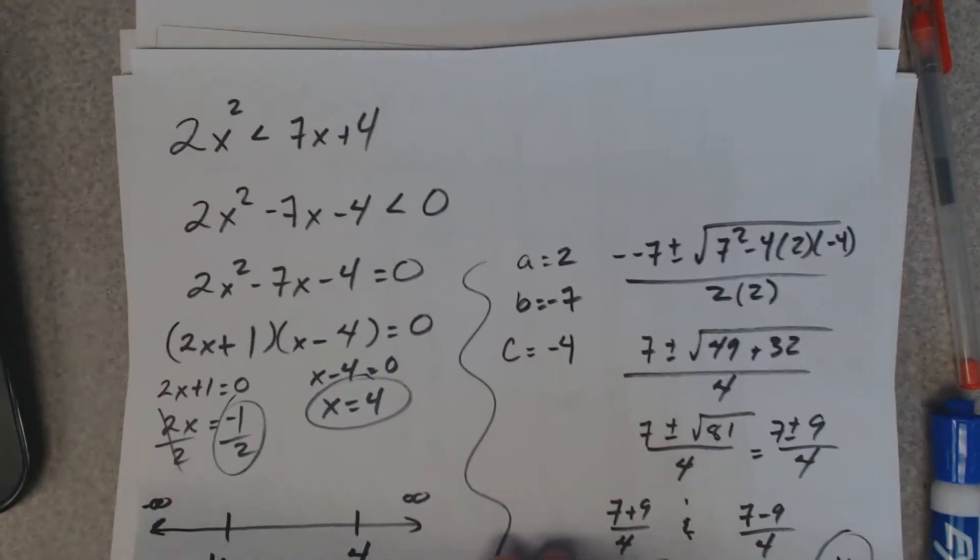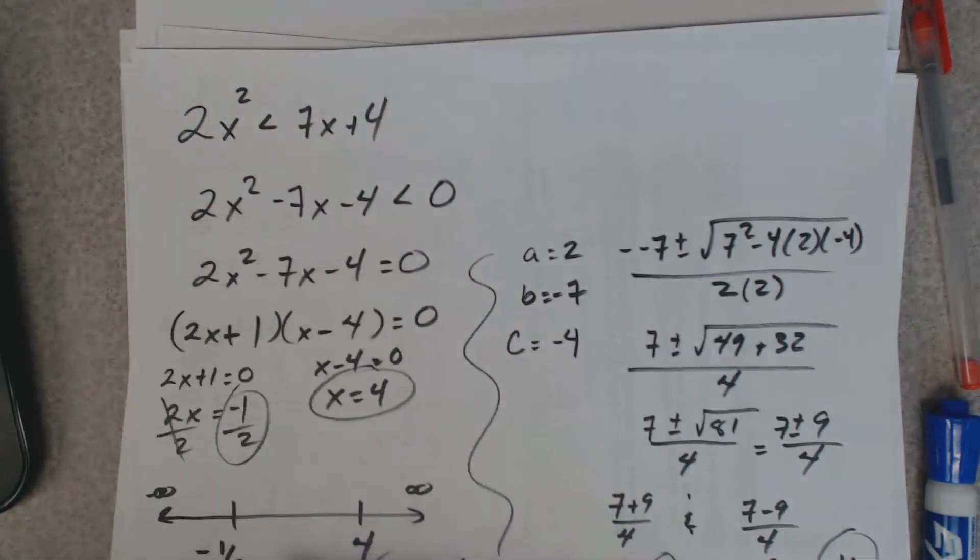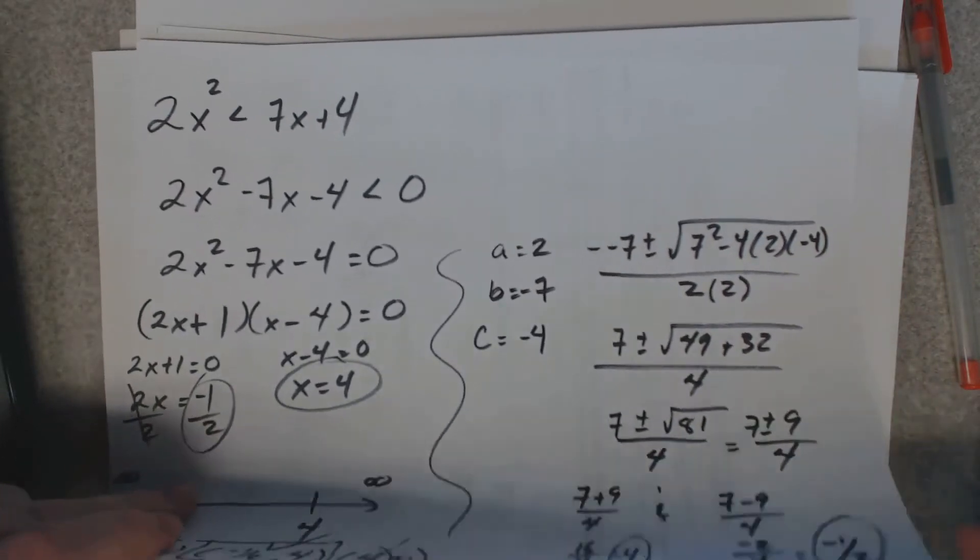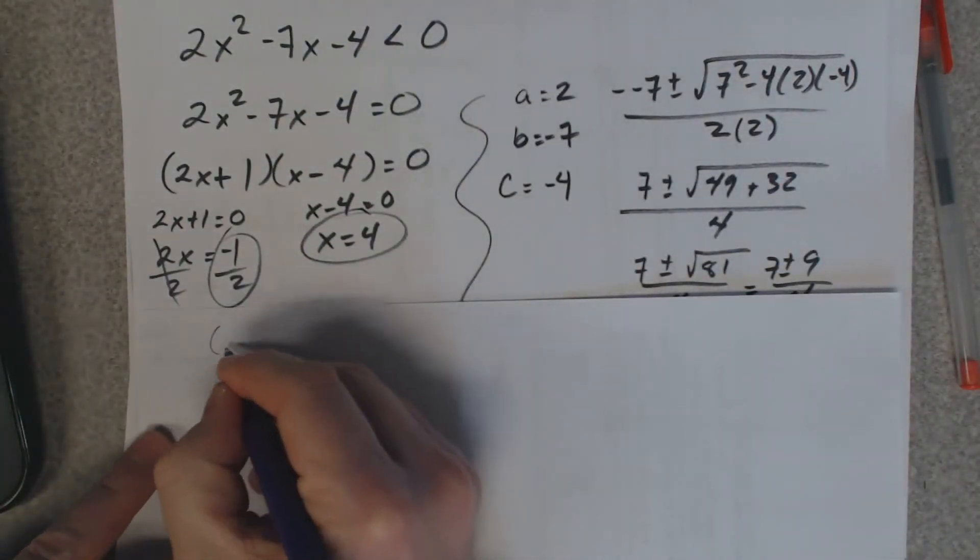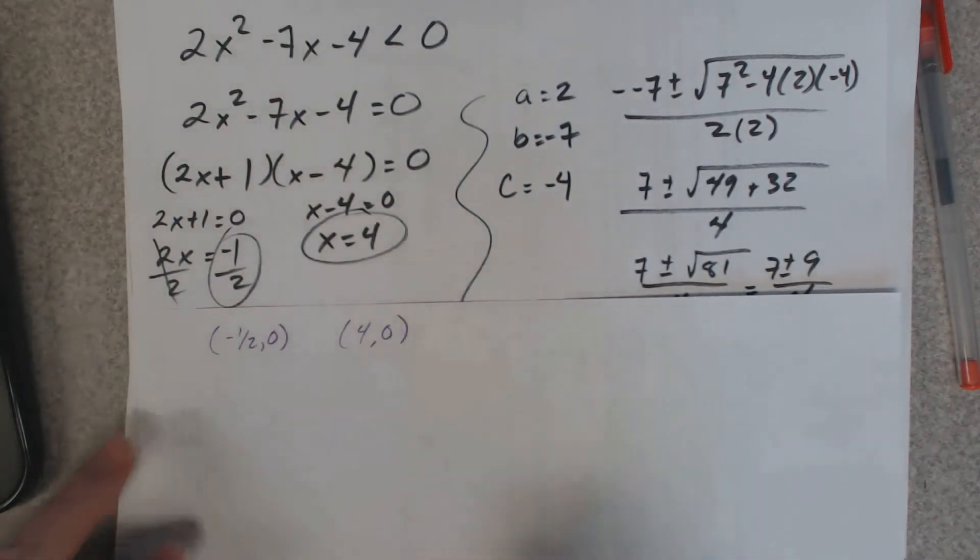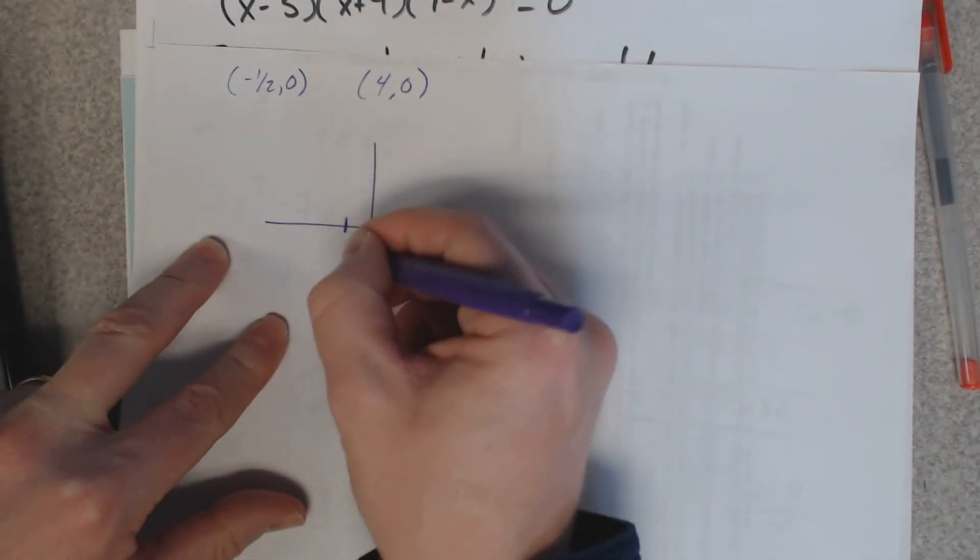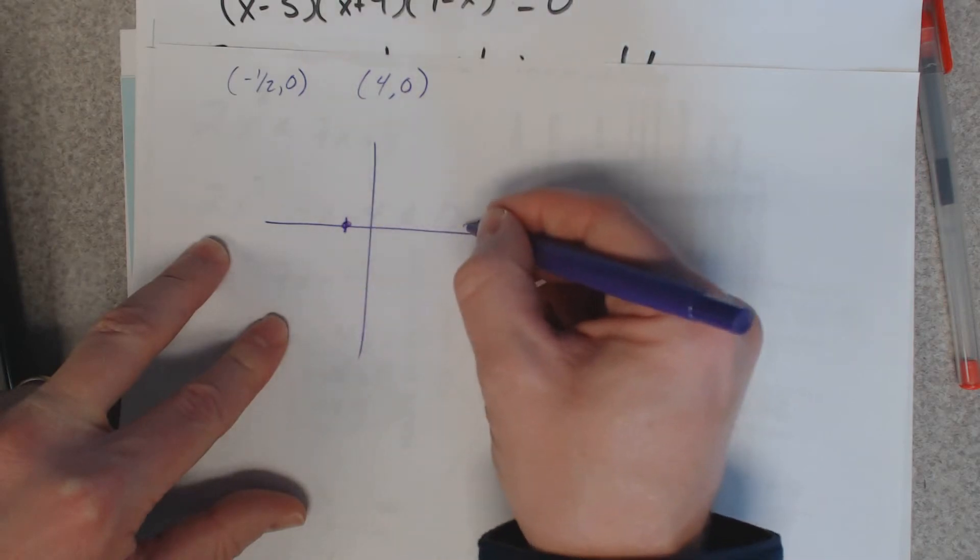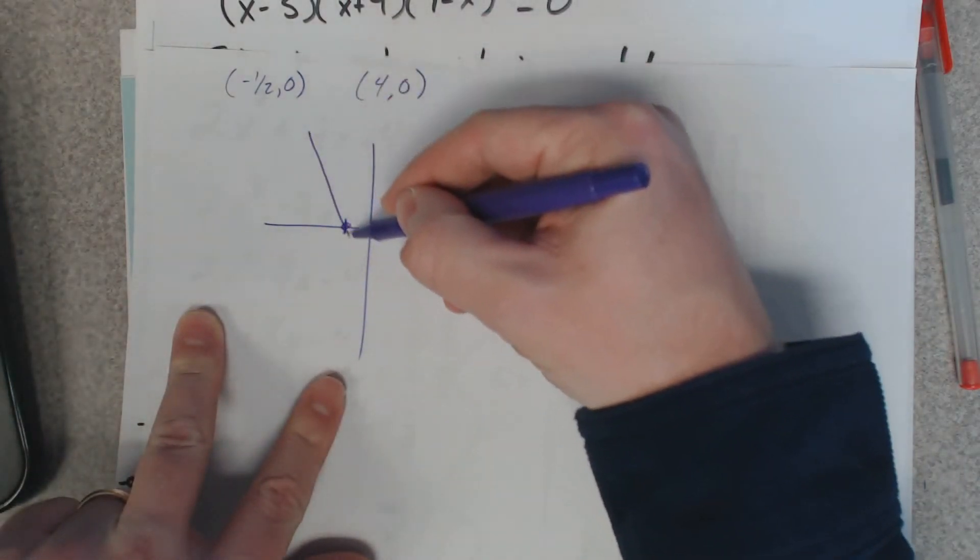So the other example I gave was this one. I already found those x-intercepts, so I'm going to assume that you can do that part. Let's look at the graph of it. So you've got your x-intercepts at (-1/2, 0) and (4, 0). If I look at the graph, negative 1/2 would be right there, positive 4 would be right there, and the graph comes in like this.